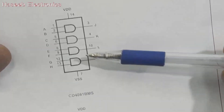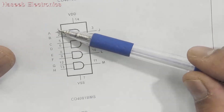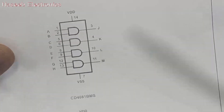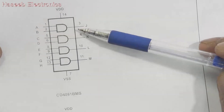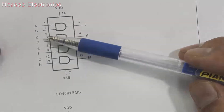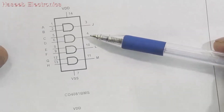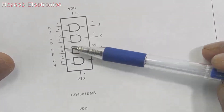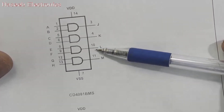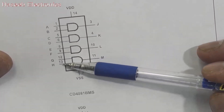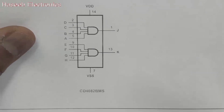For IC 4081, it has 4 gates and every gate has 2 inputs and 1 output. Pin numbers 1 and 2 are input for the 1st gate, and pin number 3 is the output. Pins 5 and 6 are input, and pin number 4 is output for the 2nd gate. For the 3rd gate, pins 8 and 9 are input and pin number 10 is output. Pins 12 and 13 are input, and pin number 11 is output.